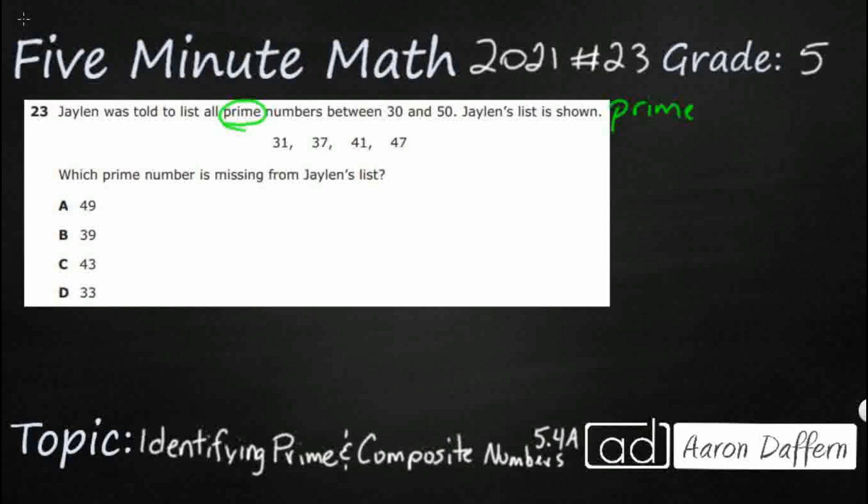So, prime numbers, only two factors, and those two factors are going to be 1 and itself. Composite numbers have three or more factors. Let's take a look at all the numbers between 30 and 50. So, that's what we've got to figure out.